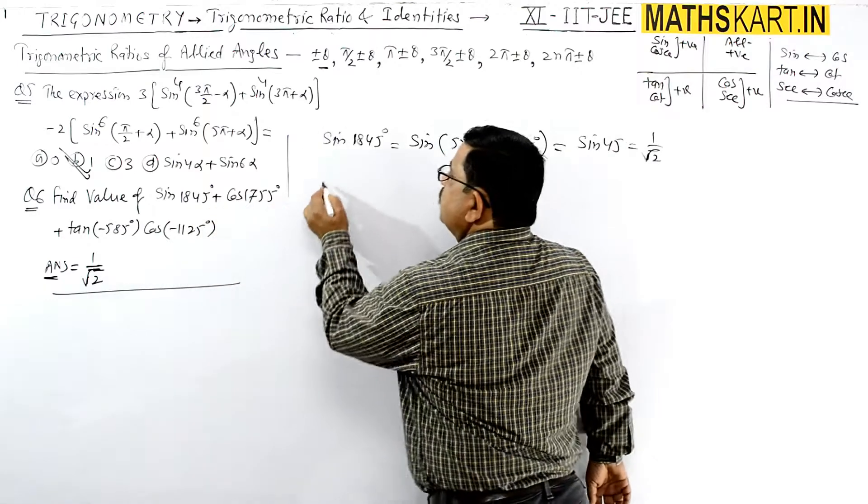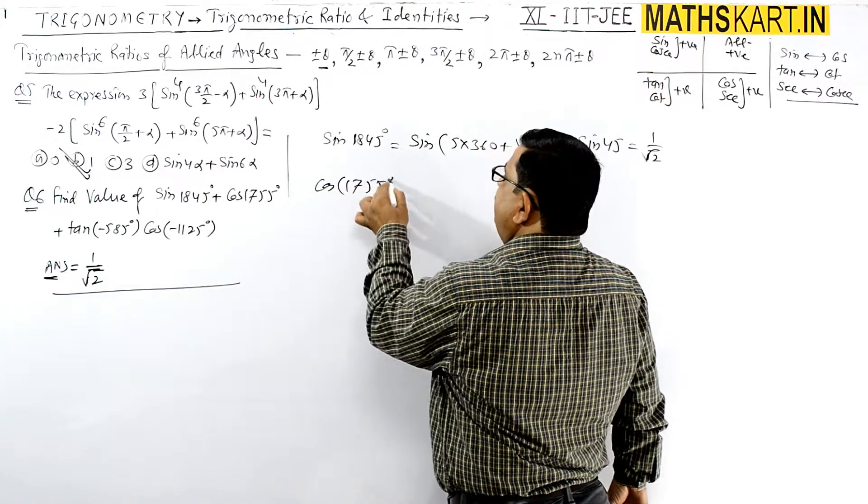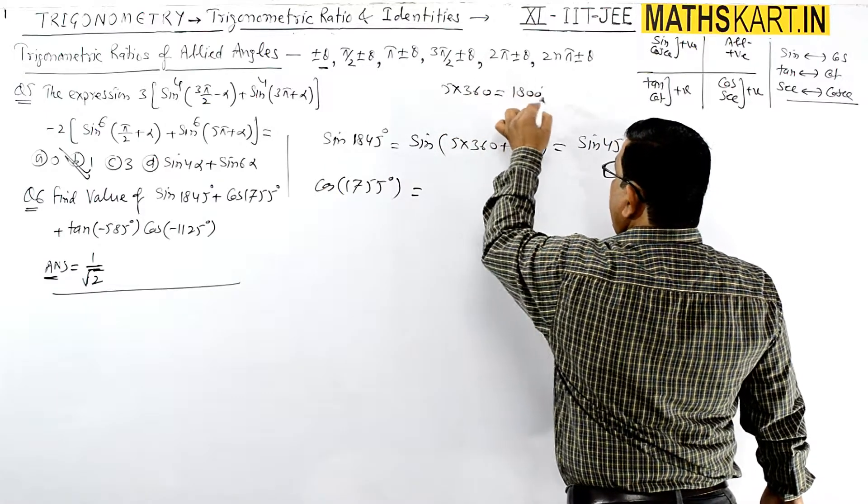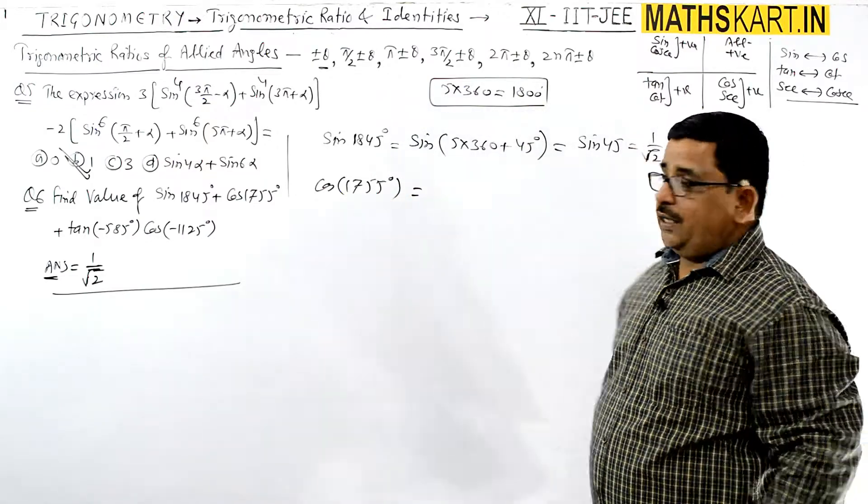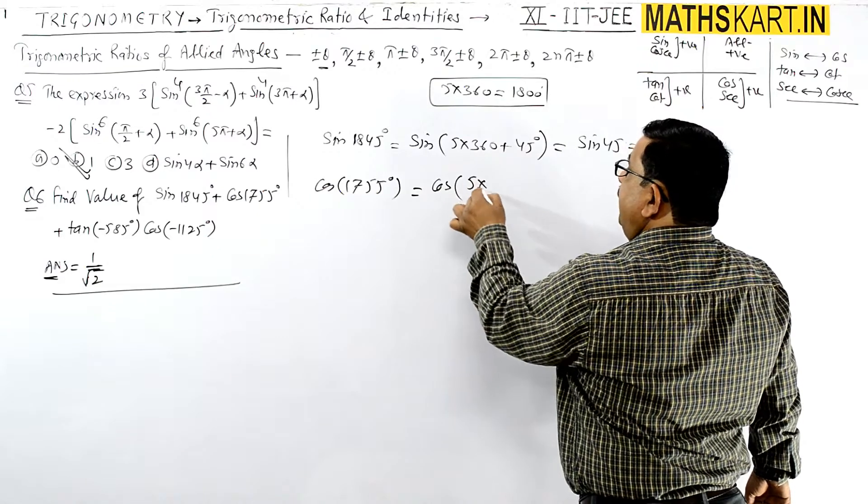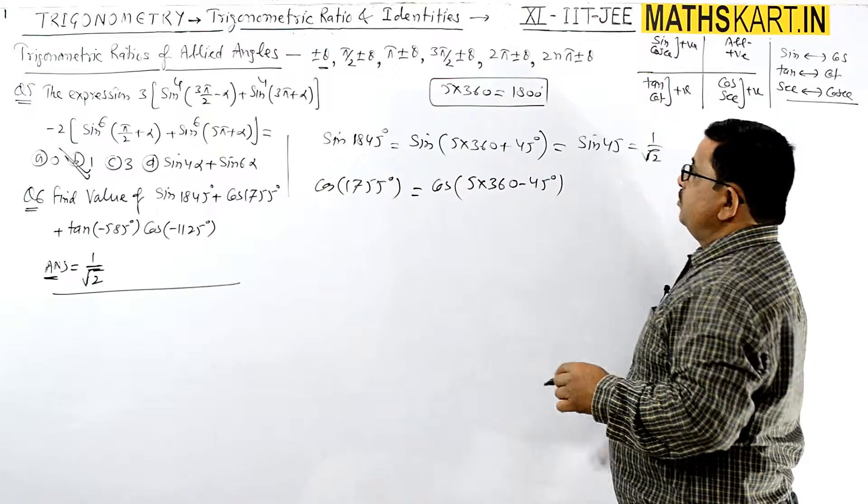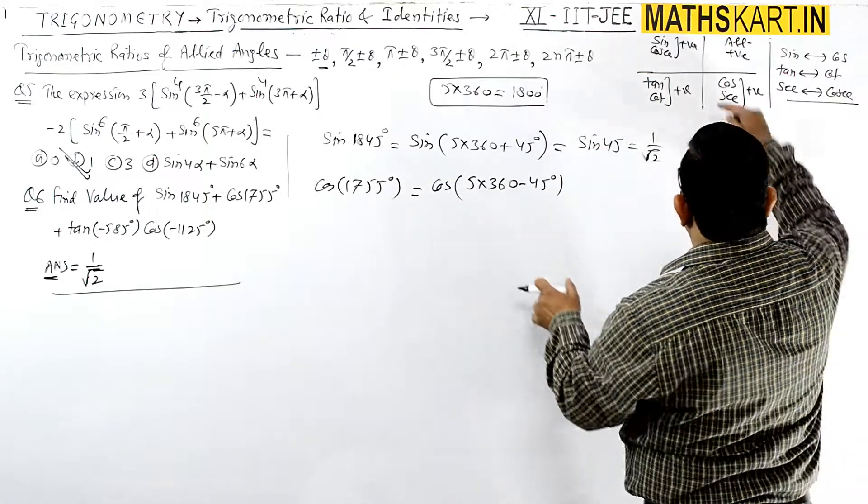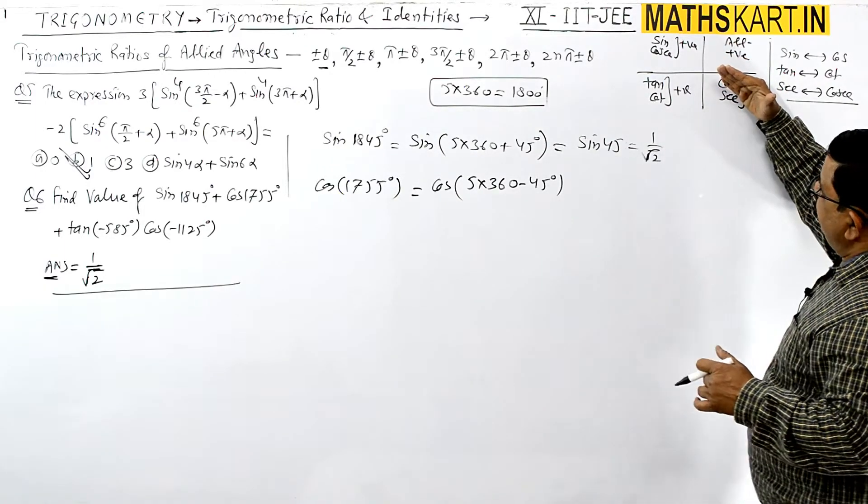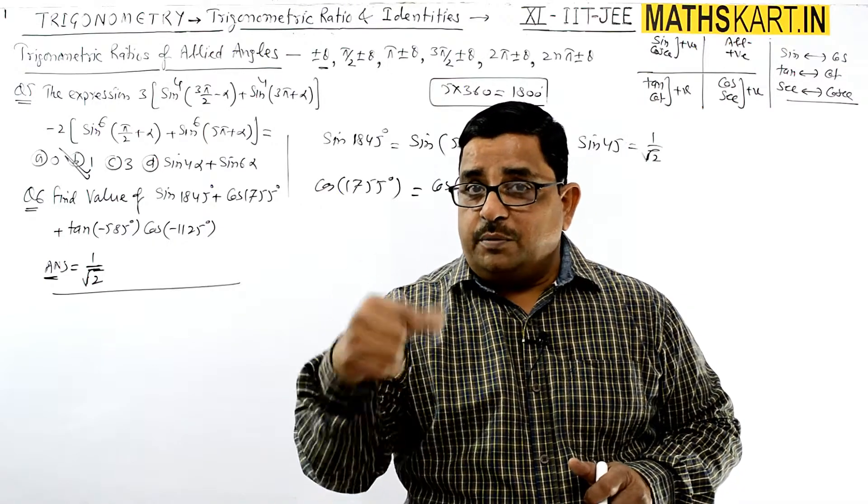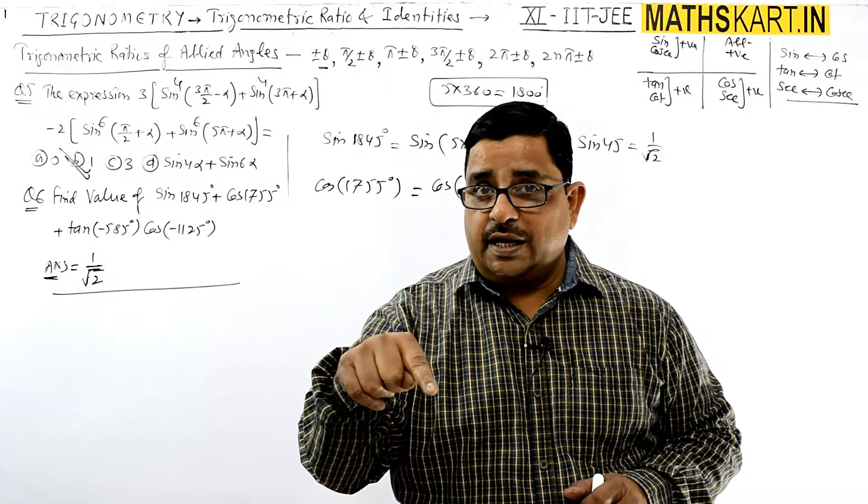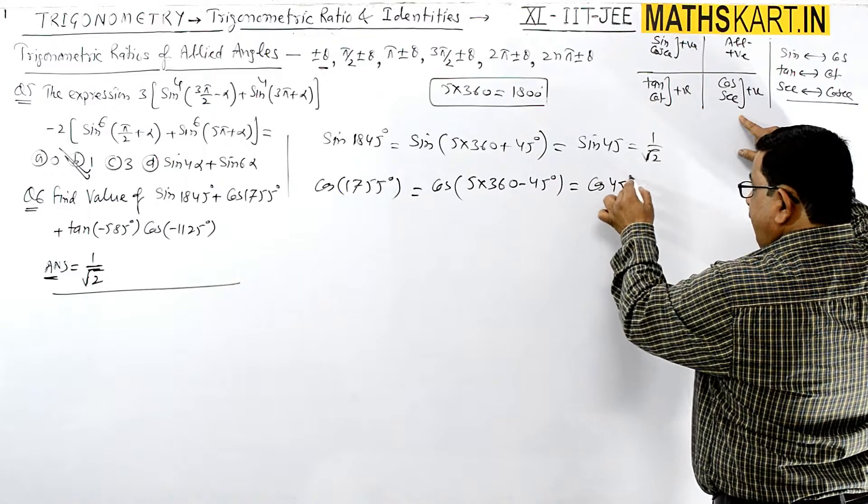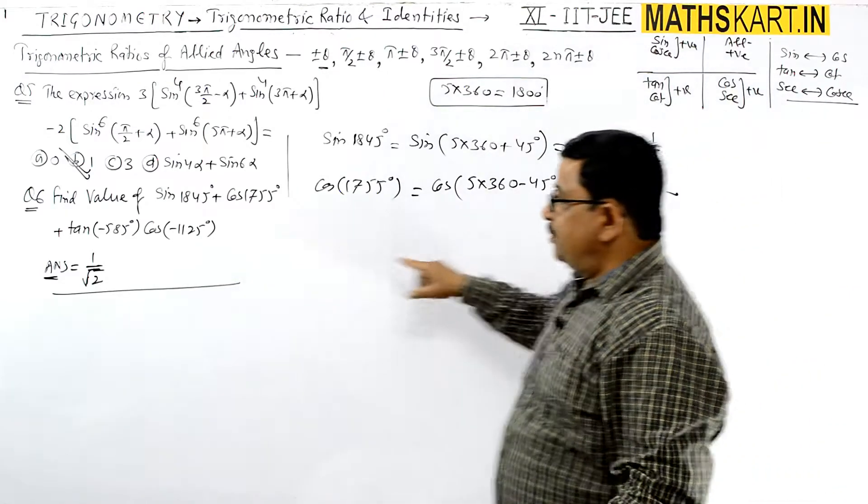Second value, see cos of 755 degrees. And we know that 5 times 360 equals 1800 degrees. So here we know that 5 times 360 minus 45 degrees, because this is 1800 minus 45. So can we write cos of, cos 2π minus θ, again it is in the fourth quadrant. In fourth quadrant, it will be positive also. So this is cos 45 degrees, and it equals 1/√2 again.